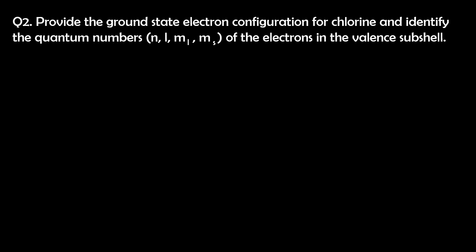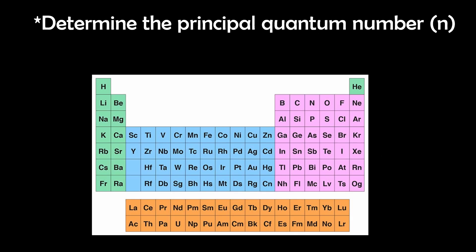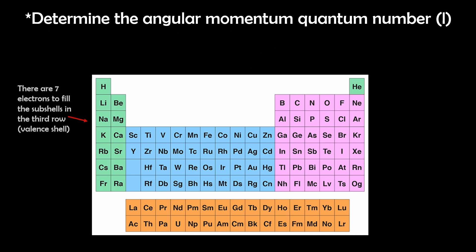To determine the ground state electron configuration for chlorine, which has 17 electrons, we repeat the same process. First, we determine that chlorine's valence shell has a principal quantum number of 3, and at this energy level, there are 7 electrons.